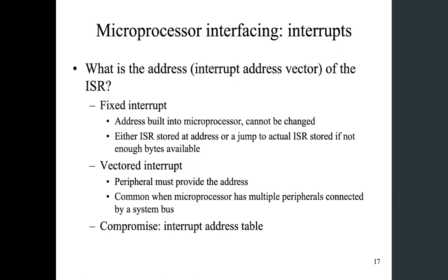The second type is a vectored interrupt. A vectored interrupt means you need to provide the actual address where the processor needs to find the ISR — the exact address in memory. This is common when microprocessors have multiple peripherals connected via system bus. So you want to tell the microprocessor: this is for interrupt service routine one, this is for the other one.